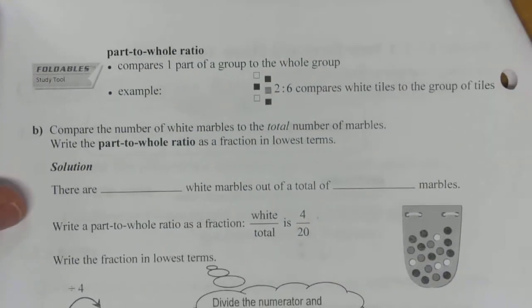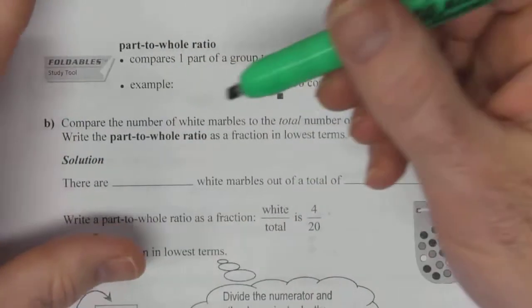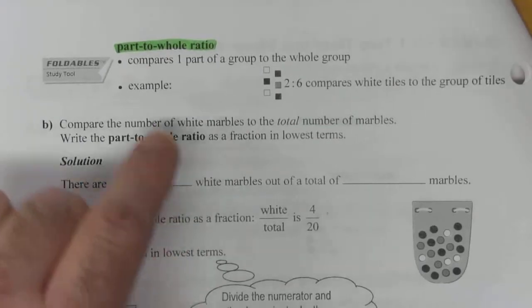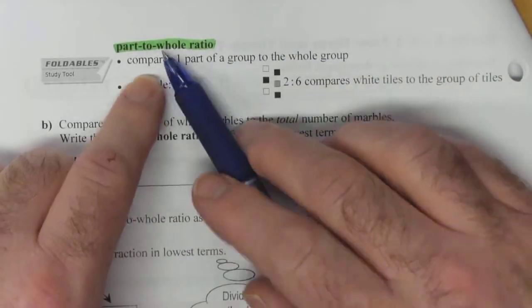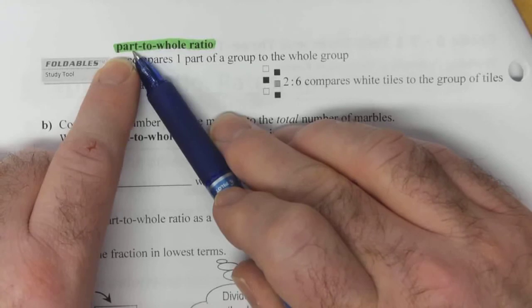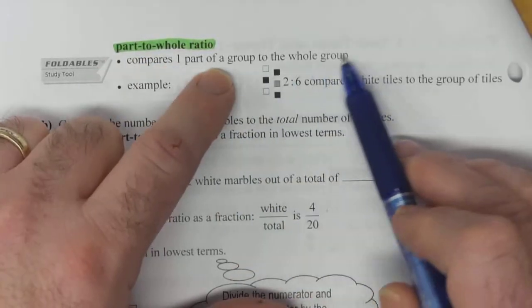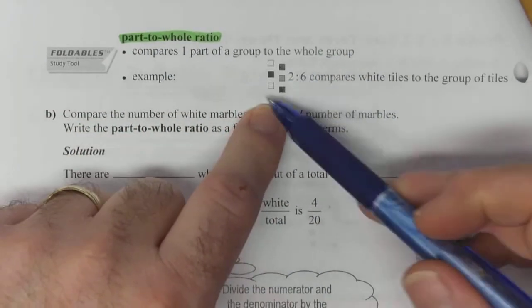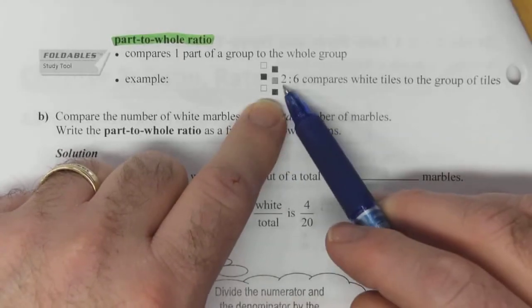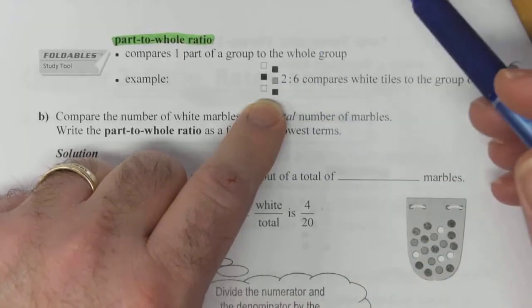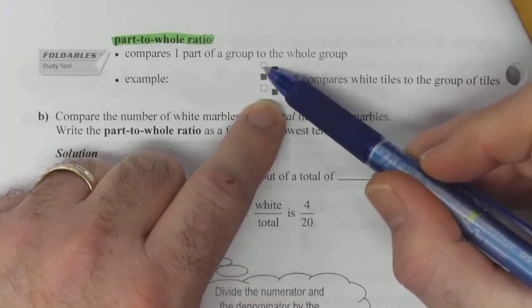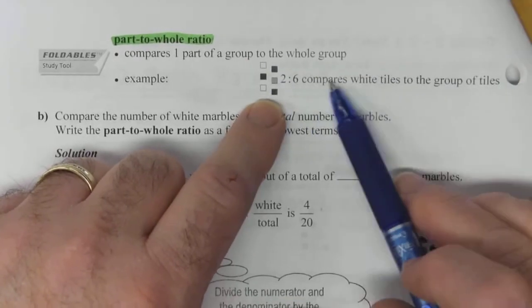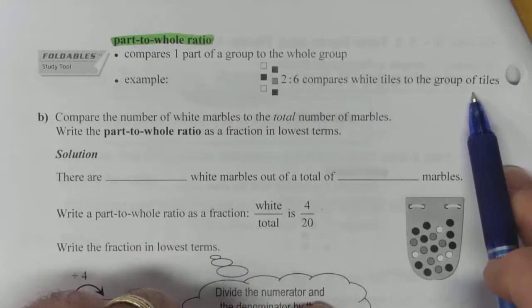Alright, so now we've looked at part-to-whole ratios. Another definition. So this is when you compare one part. So that's the first part of this, is a part. And you're comparing it to the whole group. So part of it to the whole thing. So again, using one of these little diagrams. The ratio of 2 to 6 compares the two whites to, well, 6 would be all of them. So that's the entire grouping. So it compares the white tiles to the group of tiles as a whole.